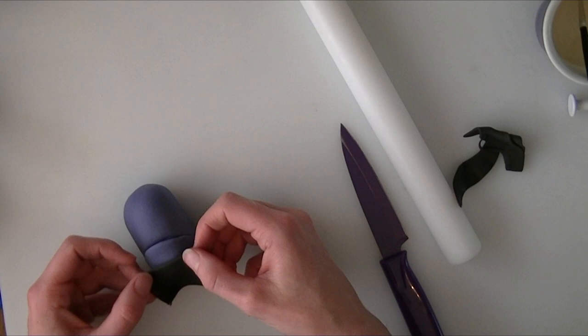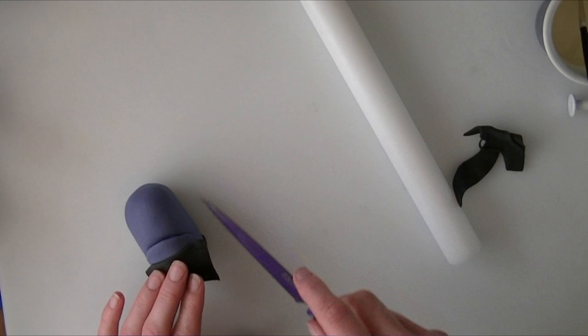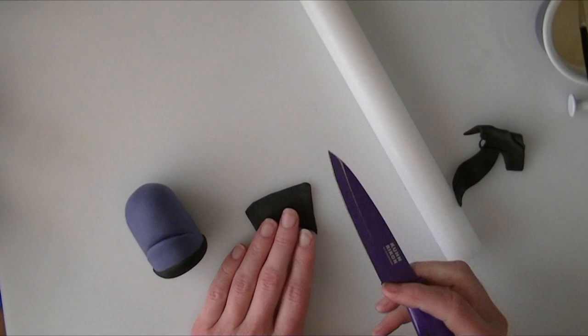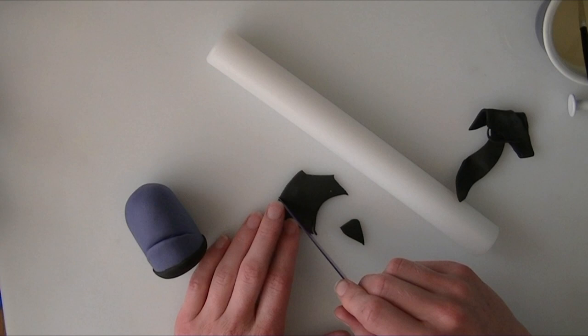I'm going to put them to about there and mark where I want them to come, either side. We're just going to bring those round to a curve, either side, and I'm just going to trim a little bit off the bottom as well.